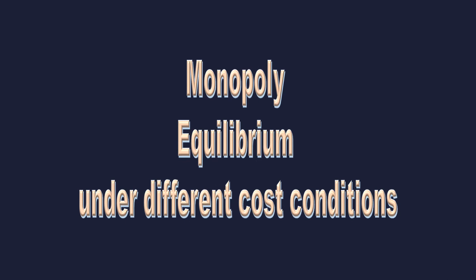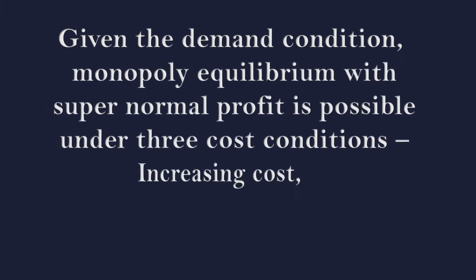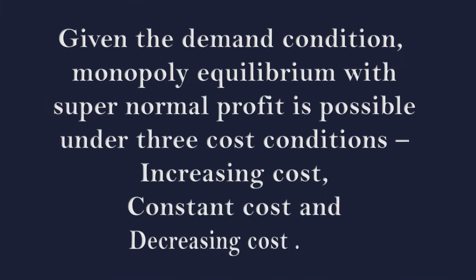In this lesson, we are going to see that given the demand condition, monopoly equilibrium with supernormal profit is possible under three cost conditions: Increasing Cost, Constant Cost, and Decreasing Cost.